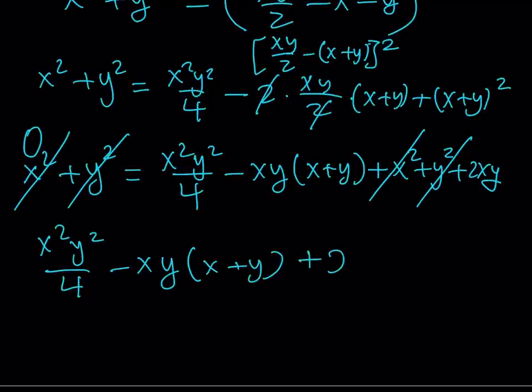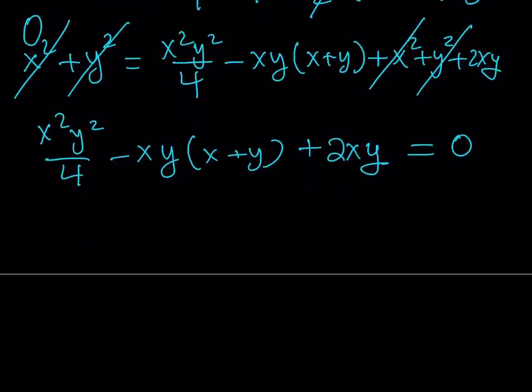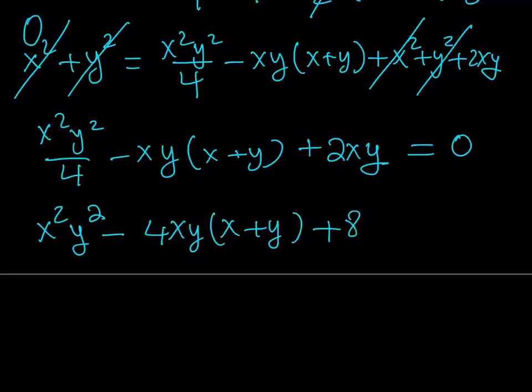This is equal to zero. Notice that we got zero from the left-hand side. Now let's multiply both sides by four, because I want to eliminate fractions. This should give me x²y²/4, and then this should be 4xy(x + y), and then this should be 8xy.